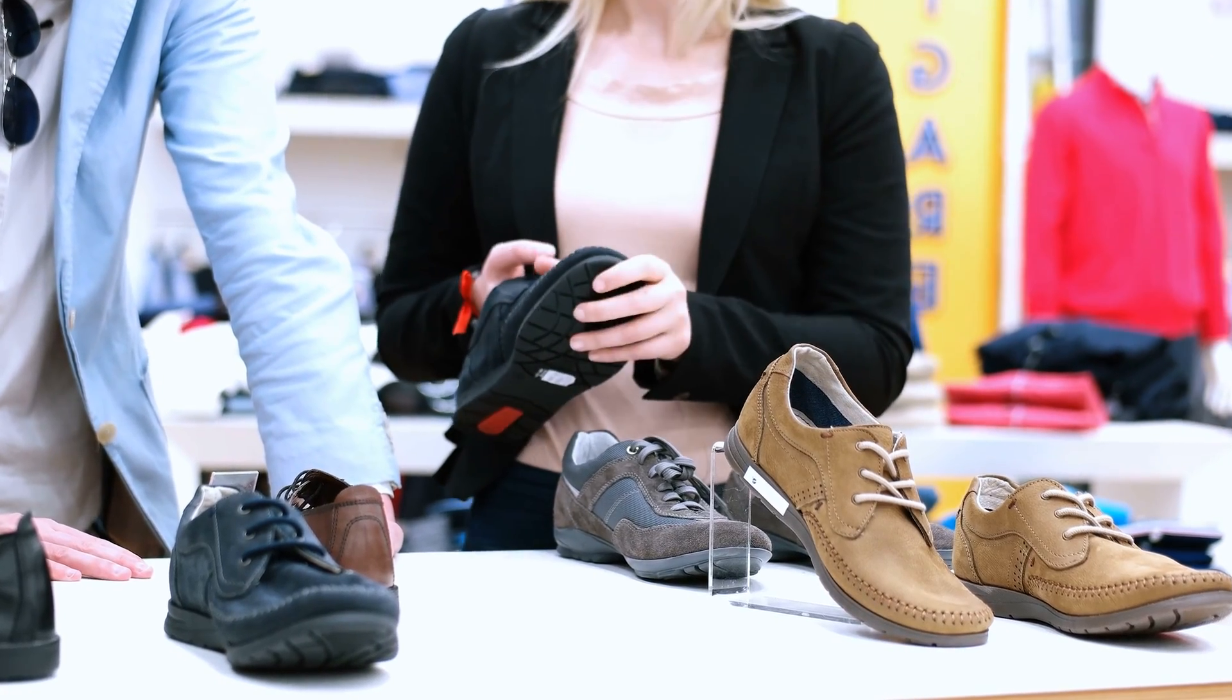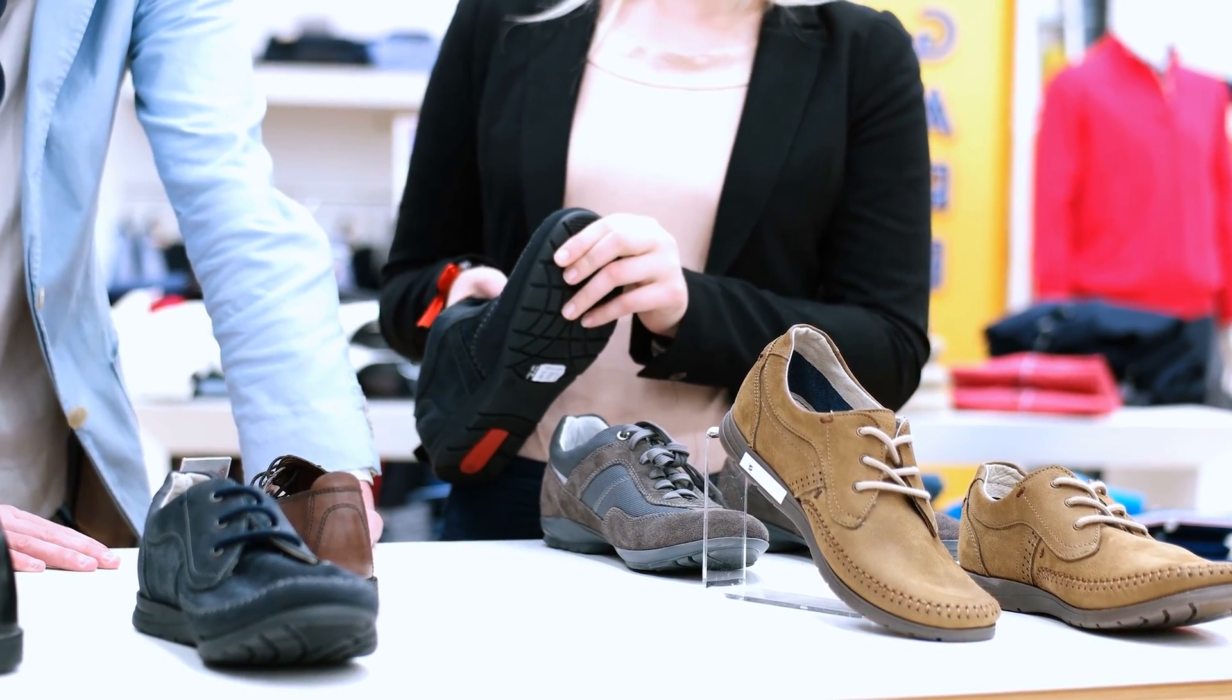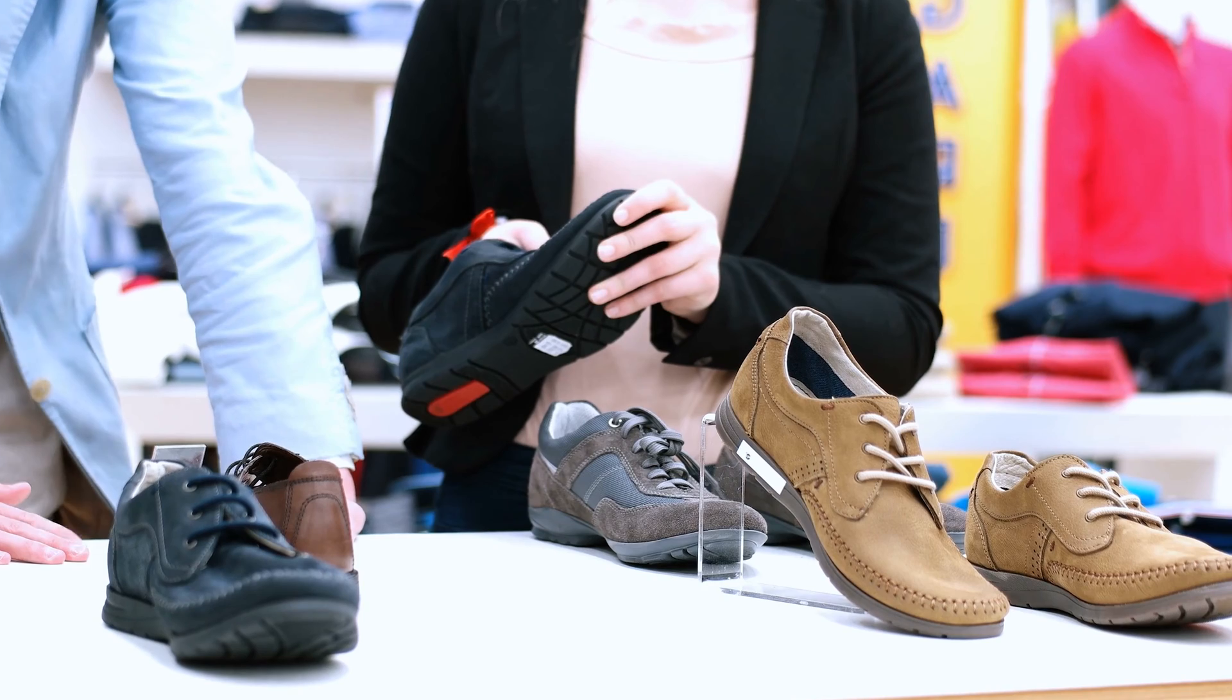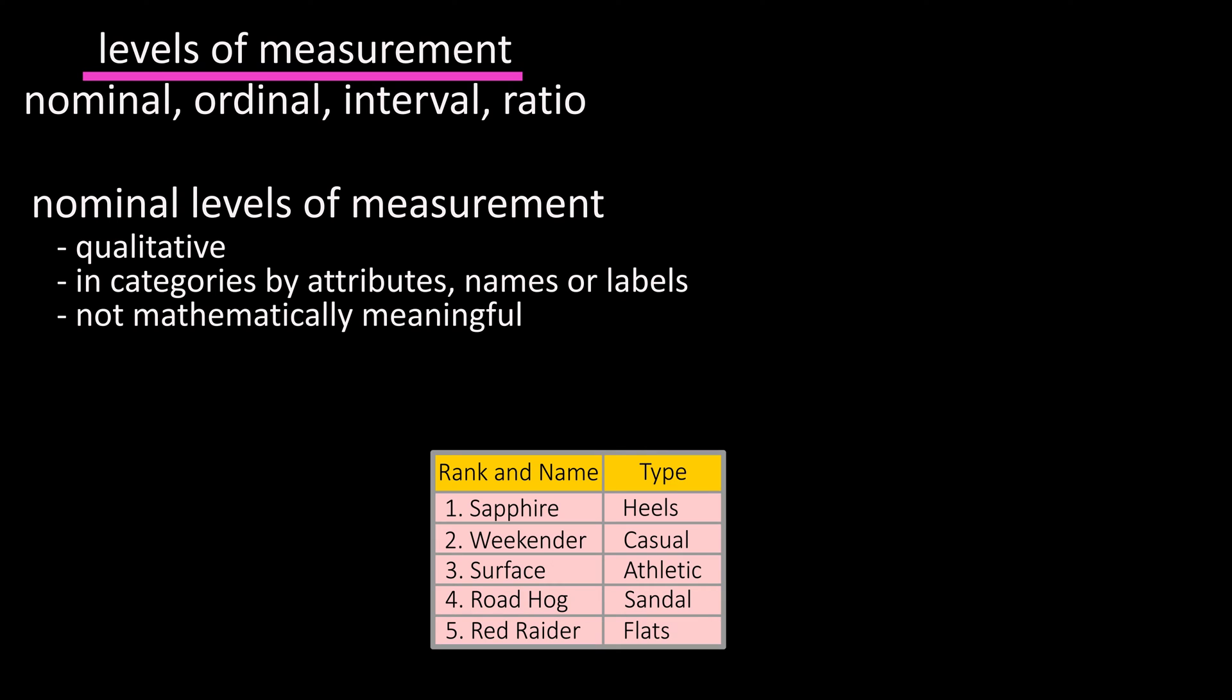Nominal levels of measurement are qualitative and often are put into categories by attributes, names, or labels, and they can't be put into an order in a mathematically meaningful way. For instance, let's say you did some research and found that the top five selling shoes at a shoe store chain were listed in this table. The second column or data set on the right lists the shoe types. No computations can be made with the types and they can't be ranked, so these data are at the nominal level.